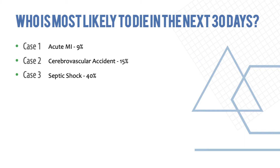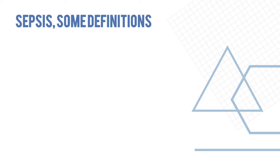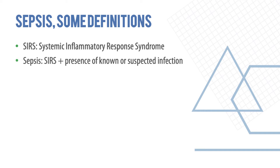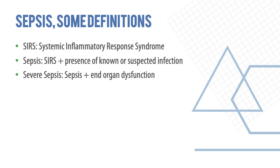Let's define some key terms. SIRS stands for Systemic Inflammatory Response Syndrome. Sepsis is the presence of SIRS along with a suspected infection. Severe sepsis is sepsis plus end-organ dysfunction. Septic shock is sepsis along with shock.